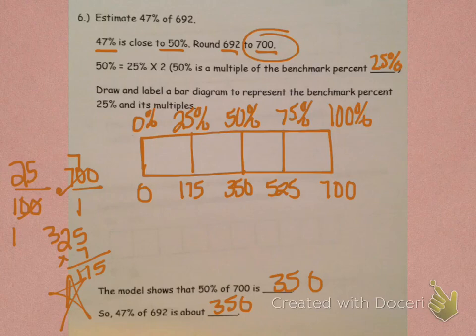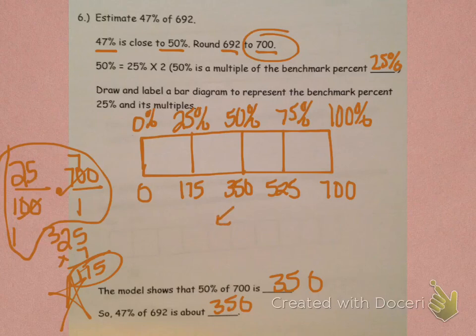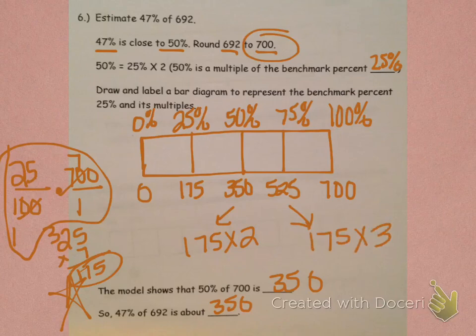Okay, so you should have figured it out by doing a little something like this, setting up our multiplication. 25% is 25 over 100, times 700 over 1. 100 goes into itself once, and into 700 seven times. 25 times 7 is 175, so that means 25% is 175. Then to get 350, you would multiply 175 times 2, and to get 525, 175 times 3.